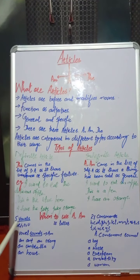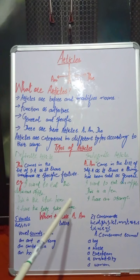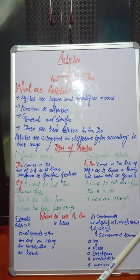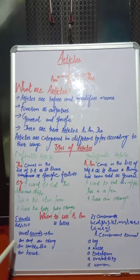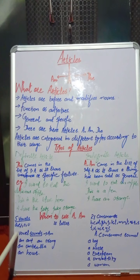We have 5 vowels — A, E, I, O, U — and 21 consonants, which are B, C, D, G, H, J, K, L, M, N, P, Q, R, S, T, V, X, Y, Z. Vowel sounds are used with 'an,' like: an ant, an orange, an umbrella, an hour. Note 'an hour' — we silent the H, and the sound comes from O, so we say 'an hour.'